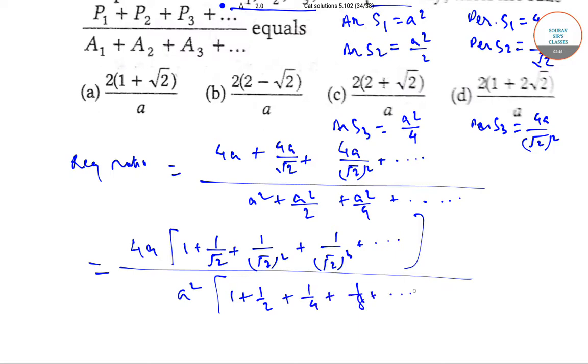that is equal to 4A times 1 by 1 minus 1 by root 2 divided by A squared times 1 by 1 minus half